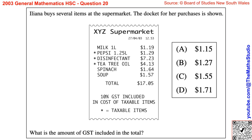Question 20. Ileana buys several items at the supermarket. The docket for her purchases is shown. What is the amount of GST included in the total?